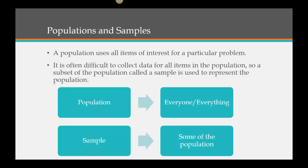As we're looking at this data, we should start finding more things within it. A population uses all items of interest for a particular problem — kind of like the universal set. It is often difficult to collect data from all items in a population, so a subset, which we call the sample, is used to represent the population. Population means everyone; sample means some of the population. It's much easier to get a sample than to get everyone to reply.